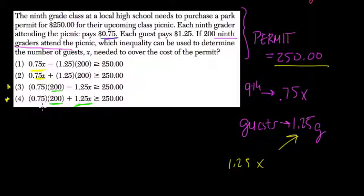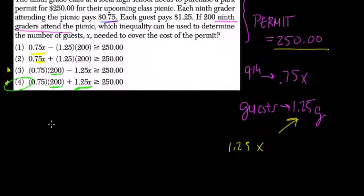How much more will we get per guest so that the total is greater than or equal to $250? If you find X here, you'll find how many guests you'll need. So that's choice 4. All right, hope this helped.